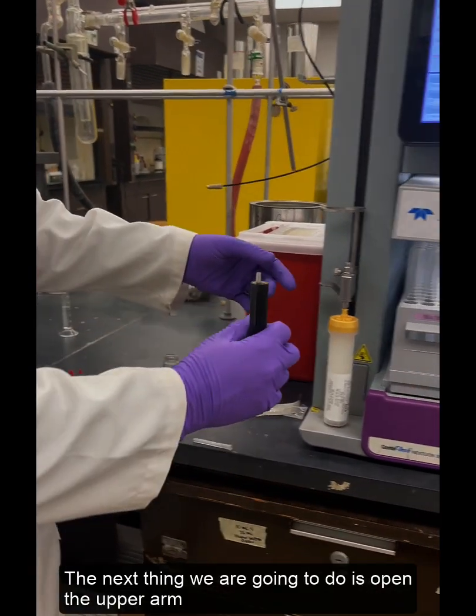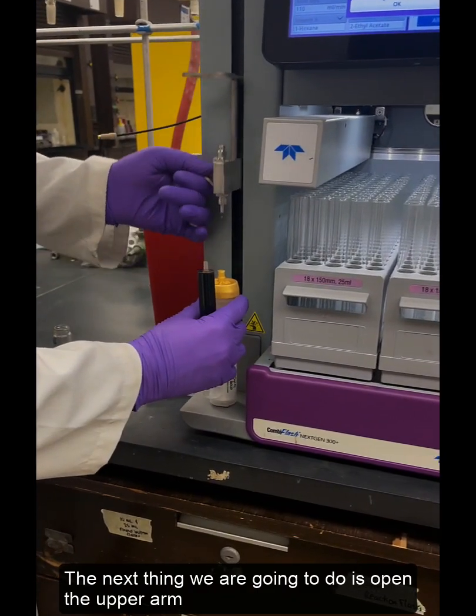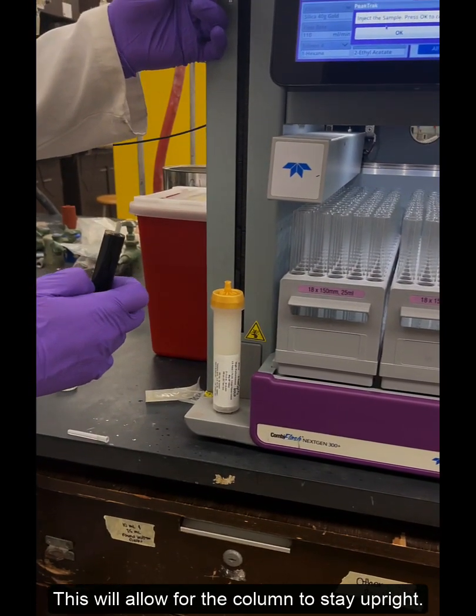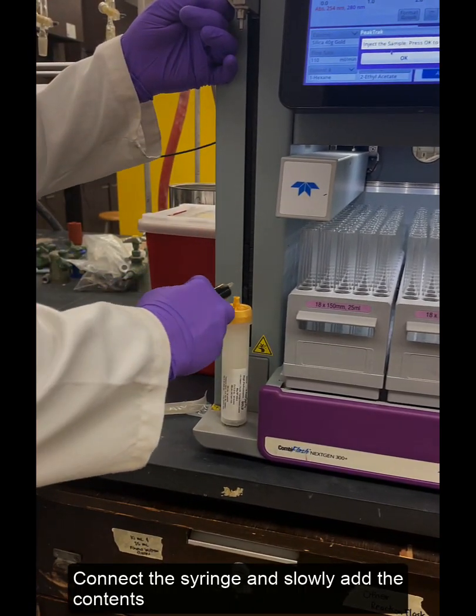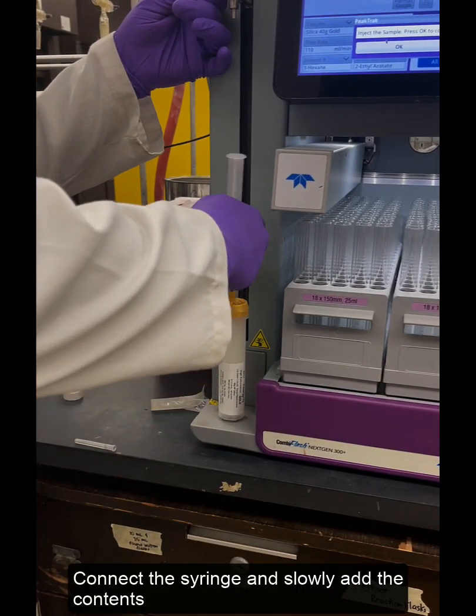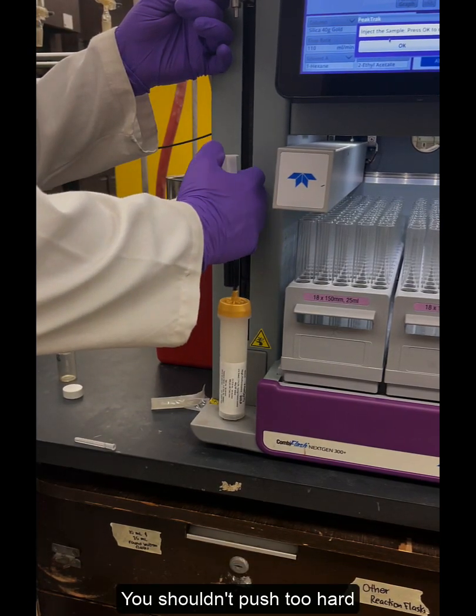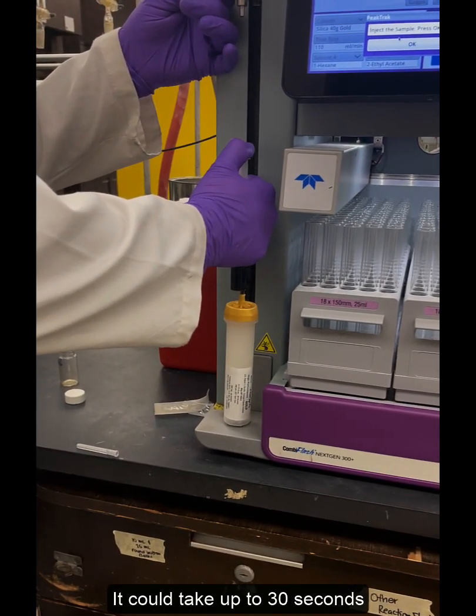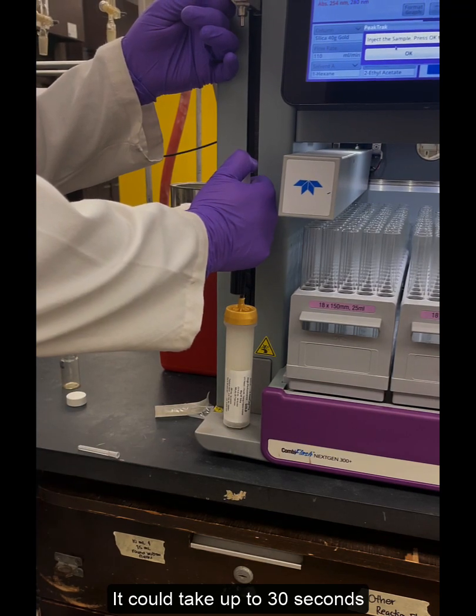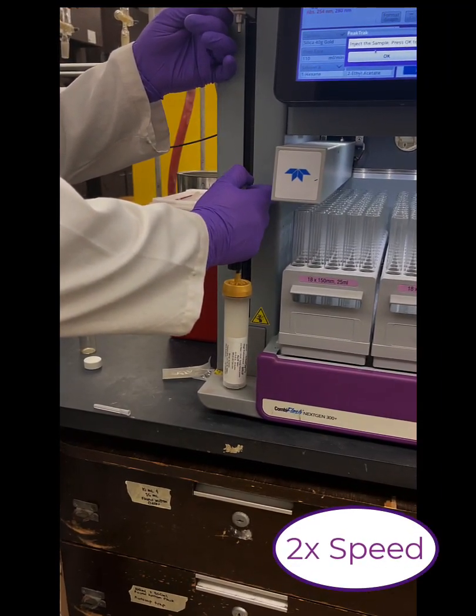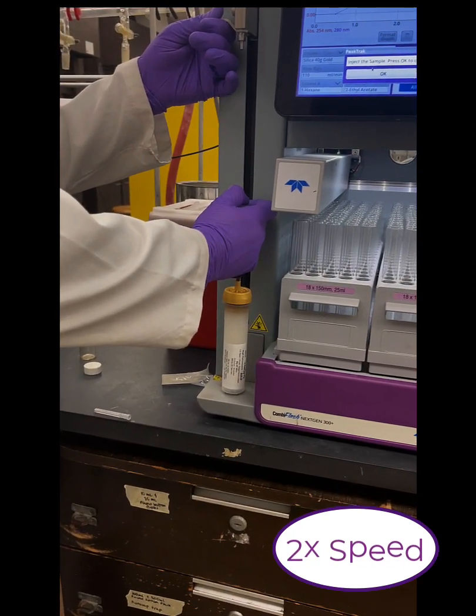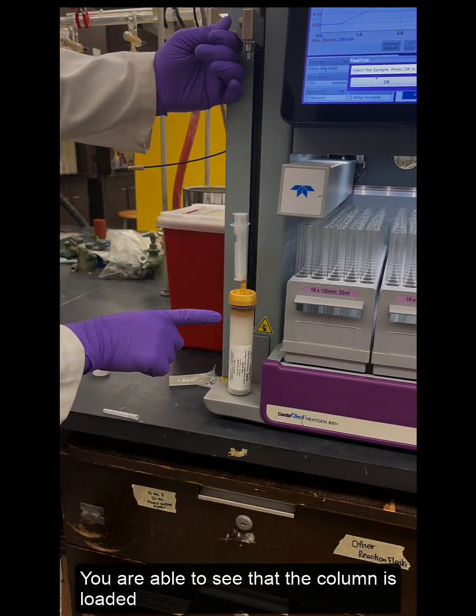Next thing we're going to do is open the upper arm which will allow the column to stay upright. We'll connect the syringe and slowly add the contents. You shouldn't really push too hard and it could take a couple seconds, maybe up to like 30 seconds. Now you'd be able to see that the column is loaded.